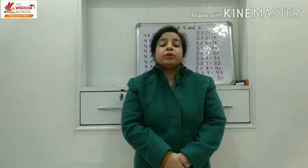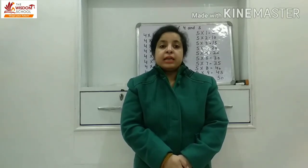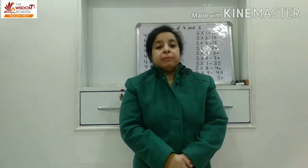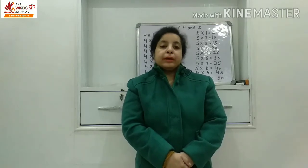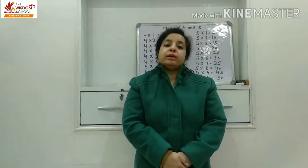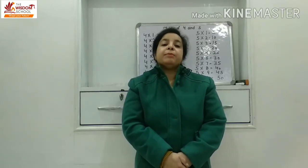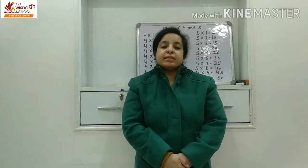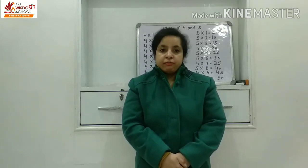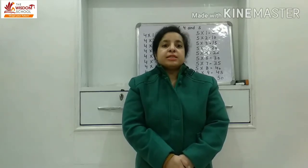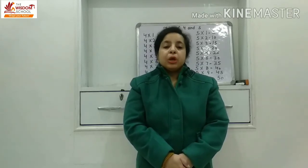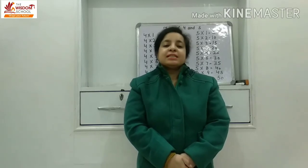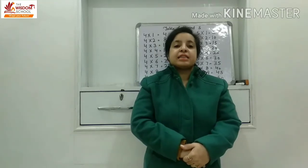Subse pahle hum two, three, four ka table revise karenge. And after the revision, we will learn the table of five. Five ka table bahut easy hai. But ye revision start karne se pahle, bitae, some basic things jo aapko pata honi chahiye — like what is the date today? Today is 21, day is Thursday, month is January, and year is 2021. So now revision time. Shall we start? Let's start.